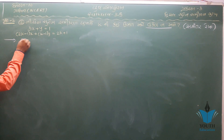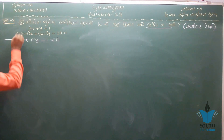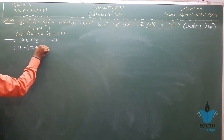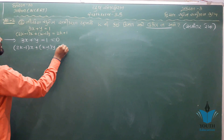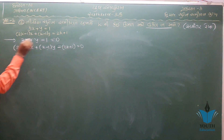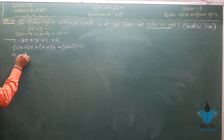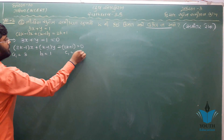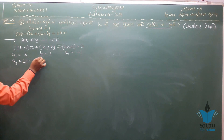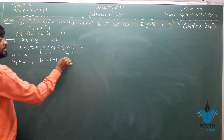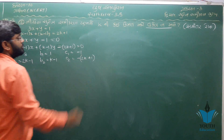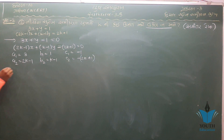3x plus y minus 1 બરાબર 0; (2k minus 1)x + (k minus 1)y minus (2k plus 1) બરાબર 0. અહીં સાગુણો: a1 = 3, b1 = 1, c1 = −1; a2 = 2k−1, b2 = k−1, c2 = −(2k+1).